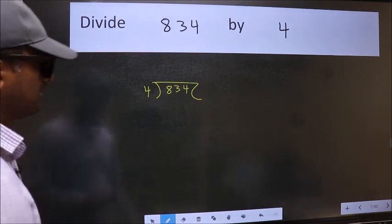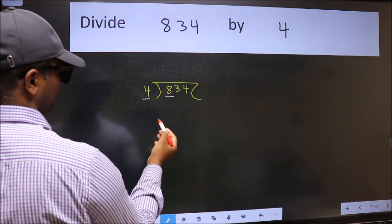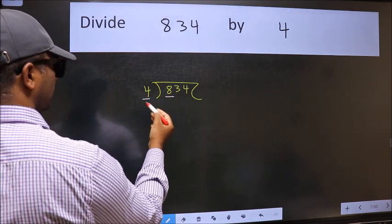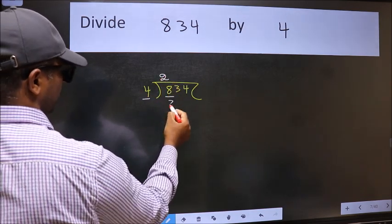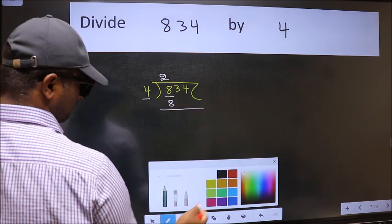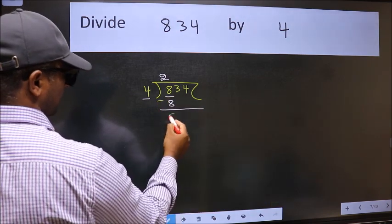Next, here we have 8 and here 4. When do we get 8 in the 4 table? 4 twos 8. Now we should subtract. We get 0.